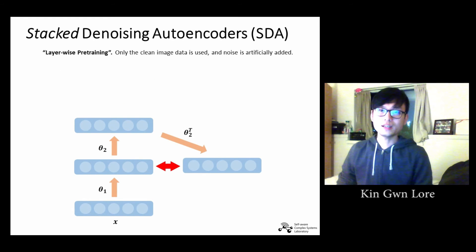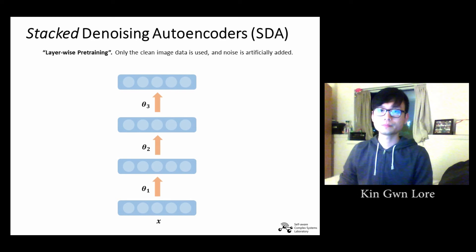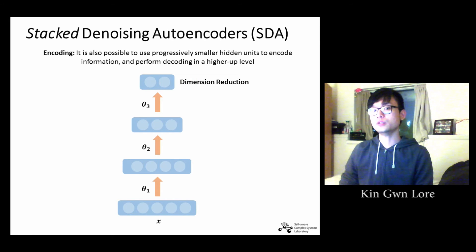After training the first layer, the second layer is trained with the same procedure. The first layer of weights are kept constant in this case. And then we train the third layer. Once we train all the layers, we get a model that looks like that. Note that the figure here shows each layer having the same number of hidden units. But in reality, we can use progressively smaller number of hidden units to encode information or as a means of dimension reduction, then perform decoding at a higher level.